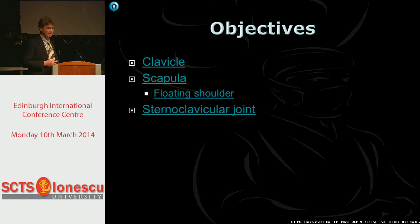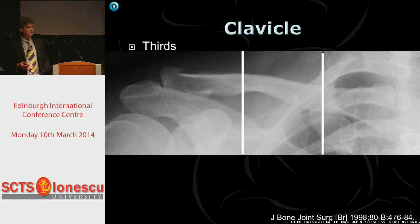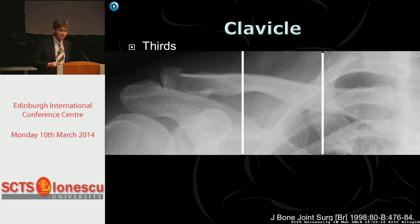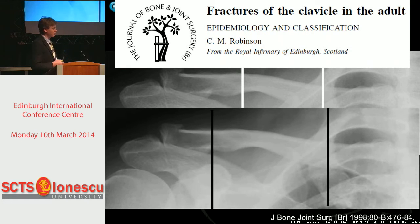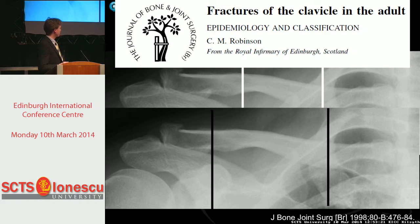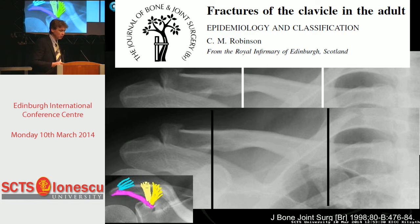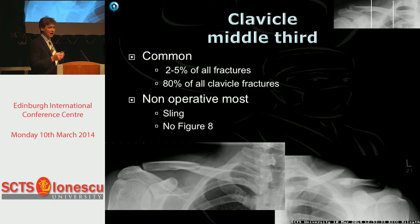I'm going to talk about the clavicle, the scapula, and the sternoclavicular joint. Classically, clavicle fractures are described in thirds: middle third, medial third, and lateral third - one point to remember about each. In orthopaedics we keep it simple: the lateral third is slow to unite, the middle third is most common, and the medial third is most uncommon. Robinson from Edinburgh introduced a newer classification dividing it into fifths - medial three-fifths, lateral one-fifth, and medial one-fifth - based on the lateral ligaments. For this talk, I'm focusing on the middle third and diaphyseal fractures as one group.